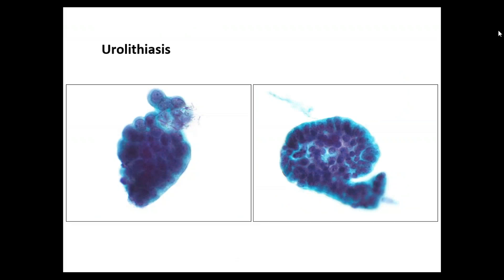In cases of urolithiasis, you typically see clusters and groups of cells without much nuclear enlargement or contour abnormalities. The stone rubbing against the mucosa is almost like an instrumentation artifact — the mucosa comes up in clusters or chunks, and you can even see a little colorette around these cells, making them almost pseudopapillary clusters. We don't see true fibrovascular cores, which is why we don't call this a low-grade urothelial neoplasm.